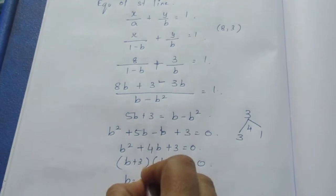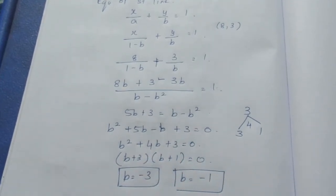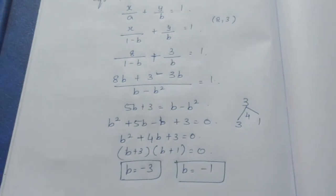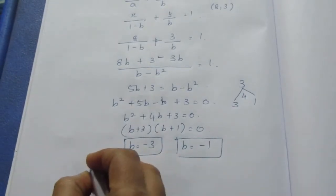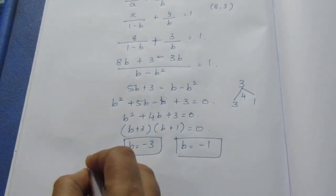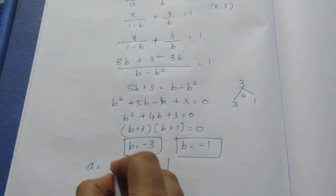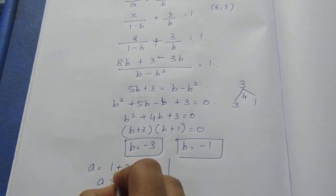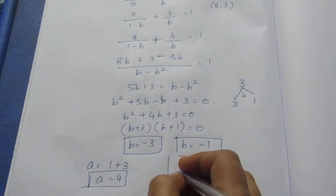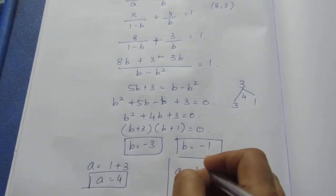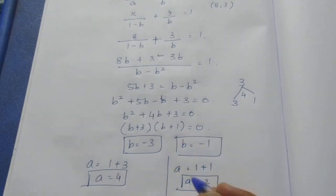So b equals minus 3 or b equals minus 1. Substituting back to find a using a equals 1 minus b: when b equals minus 3, a equals 1 minus (minus 3) equals 4; when b equals minus 1, a equals 1 minus (minus 1) equals 2. So we have two sets of values.